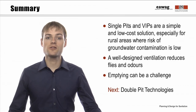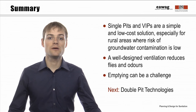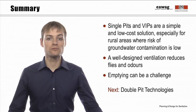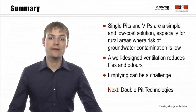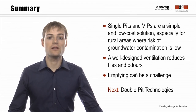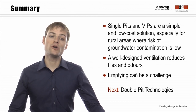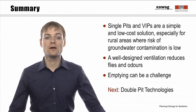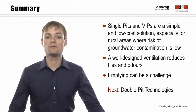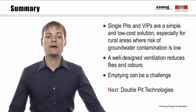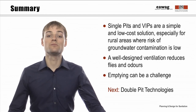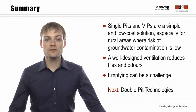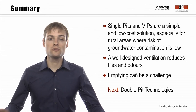Single pits are a simple technology which can be very appropriate, particularly in rural areas with a low risk of groundwater pollution. Single pits should not be used where the groundwater table is high, or in areas that are frequently flooded or have rocky soils. They are not suitable for dense urban areas, particularly because emptying can pose serious problems and health risks. The use of a vent pipe in a VIP adds comfort and reduces flies, but needs to be carefully designed to function properly. In the next module we are going to look at the technologies that use two pits.